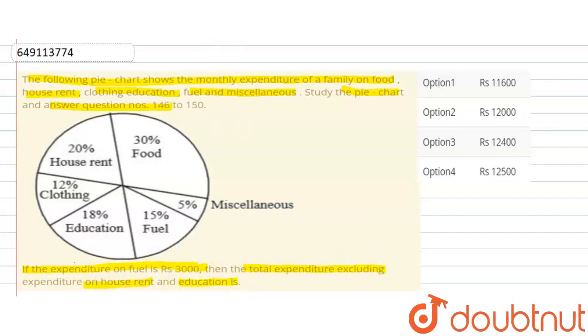So, we will remove expenditure from house rent and education. Expenditure on fuel is given as 3000. We will see how much percentage is given for fuel in the pie chart.